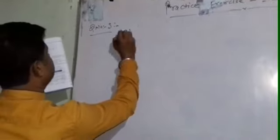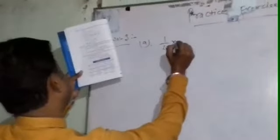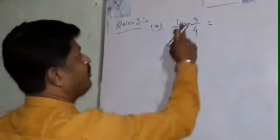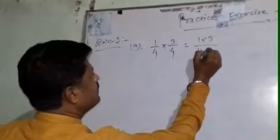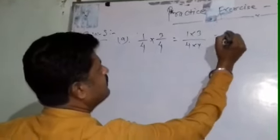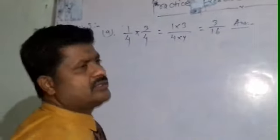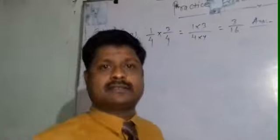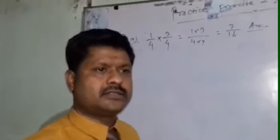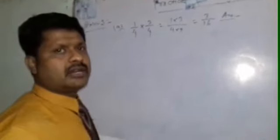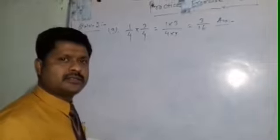Subsection A from question number 3: 1 by 4 has to be multiplied with 3 by 4. Firstly 1 is multiplied with 3, and 4 is multiplied with 4. Then you get 3 by 16. And this is your answer. These questions are very easy — take patience and solve them one by one. If you have any problem, then you can call me and I will solve your questions very easily.